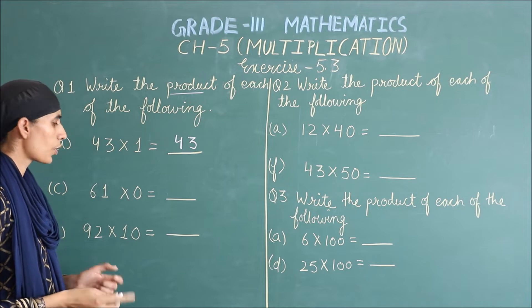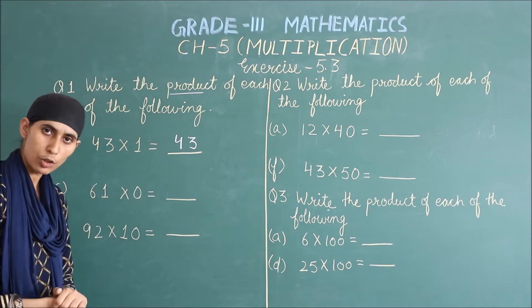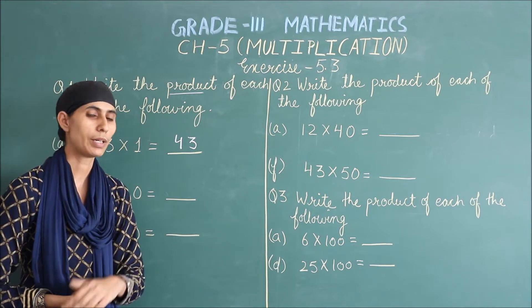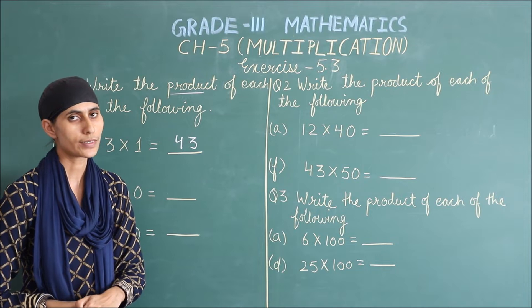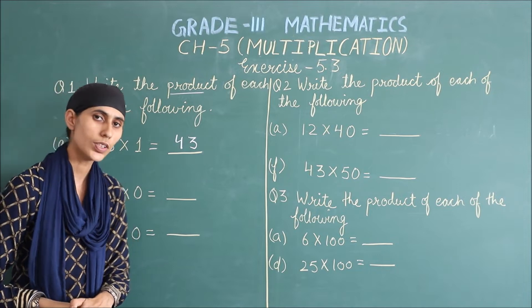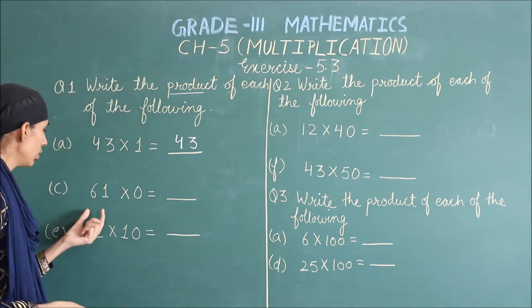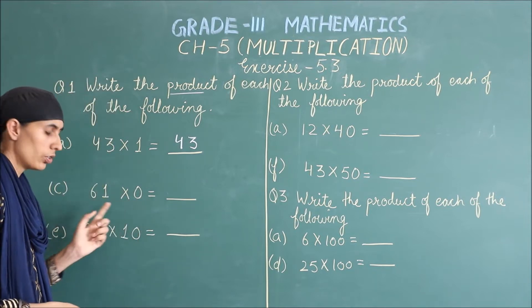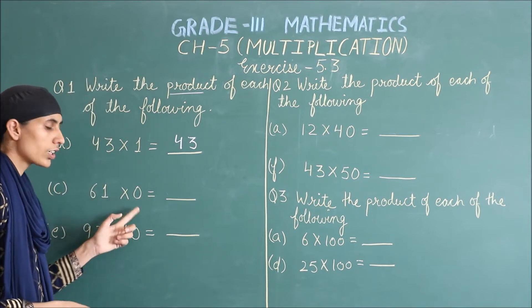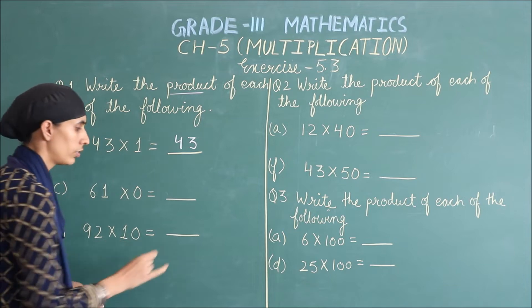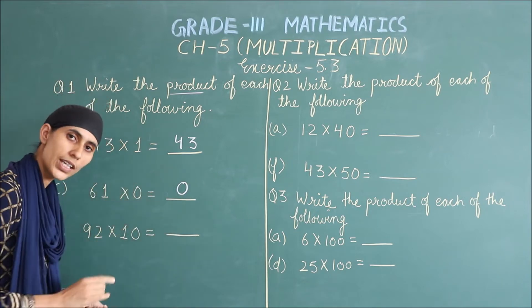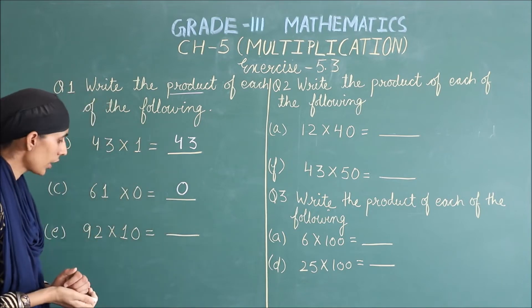Next: 0 کی property میں نے آپ کو ابھی بتائی تھی۔ کسی بھی نمبر کو 0 سے multiply کرنے پر answer کیا آتا ہے؟ 0. So, 61 multiply by 0 — 61 zeros are 0.